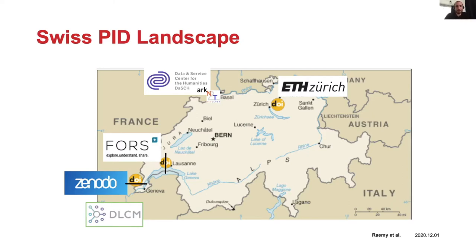In Switzerland, we have several infrastructural services providing PIDs and mainly DOIs. There is a mixture of monopolized attribution, sometimes with contradictory policies and unclear legal issues, which leads to an unsatisfying and confusing situation. So that's why we wanted to build something else. Here on the map, the ETH in Zurich is the main provider of DOI — they are a member of DataCite, but it's quite costly and apparently going to be even more so next year.